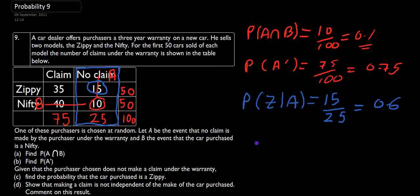Let's look at what happens, what the probability of making a claim if the car we purchased was a Zippy. So the probability of making a claim, not A, given that we had a Zippy, is going to be equal to, well, we're looking at given that we had a Zippy, so we're in this row here. And there are 35 claims out of 50.